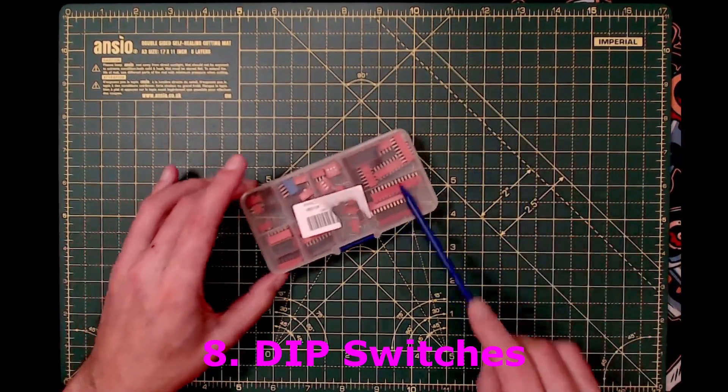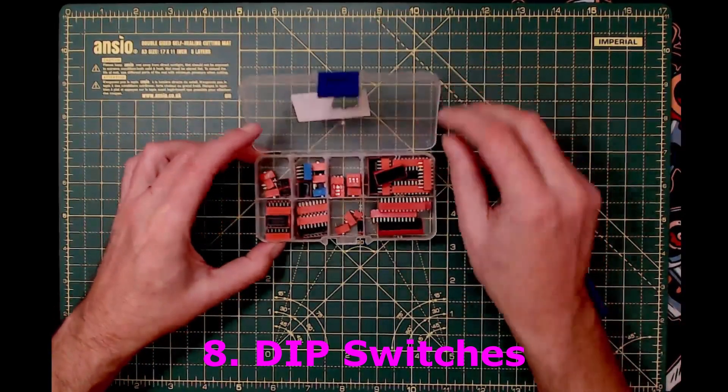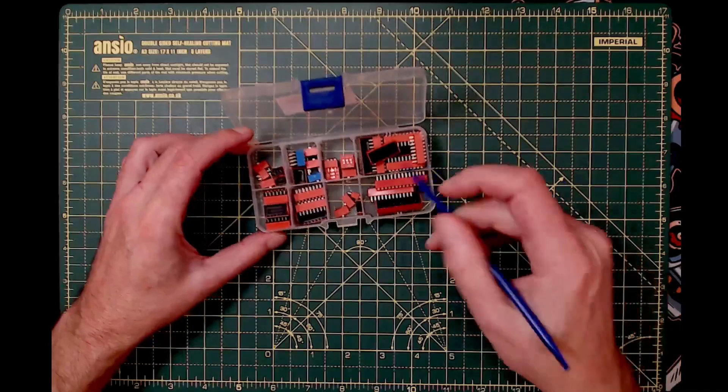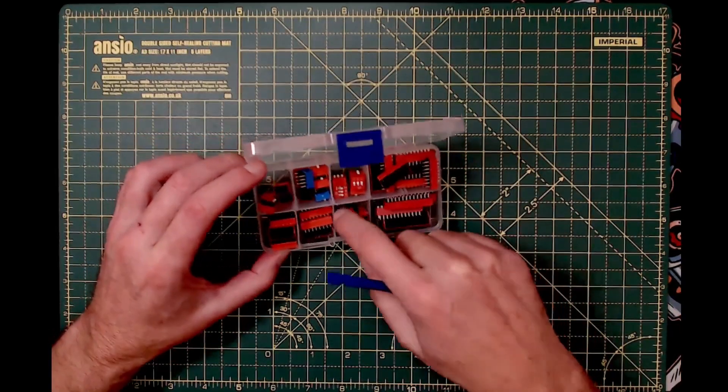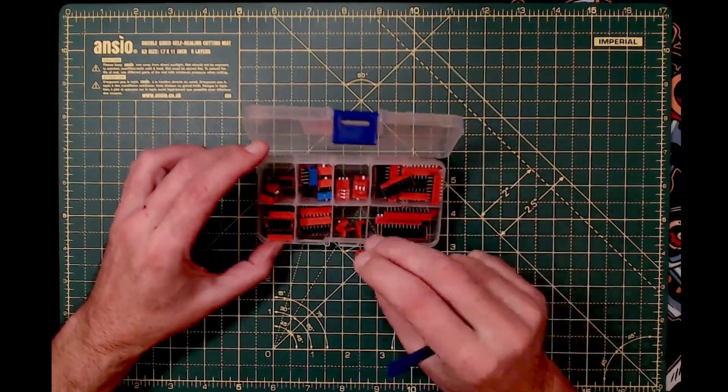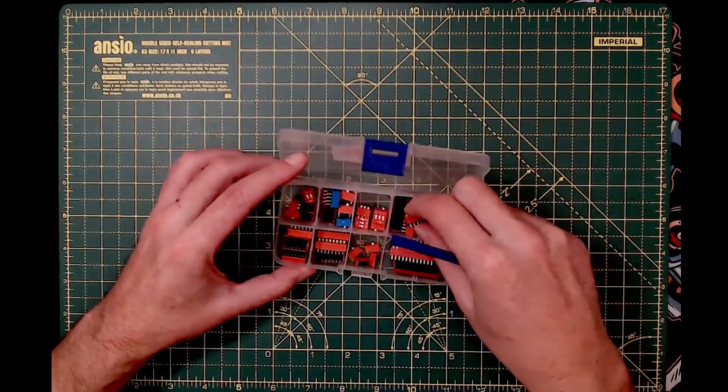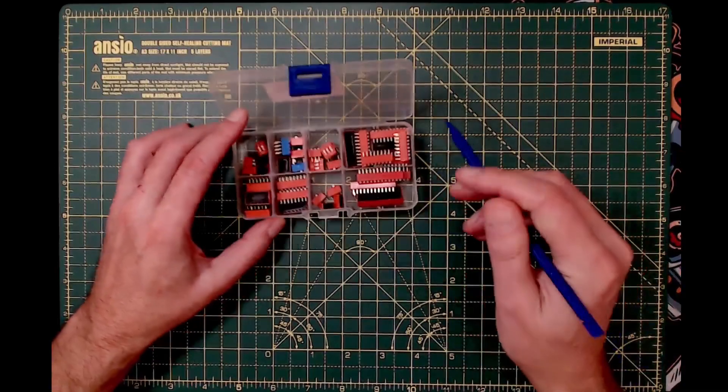Next: dip switches. If you get a kit like this, you get various configurations—the number of switches goes down to an individual one, though I can't see the point of that. But once you've got eight of them, or four, or whatever, they're really handy.